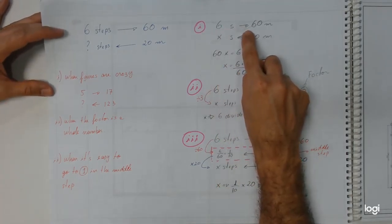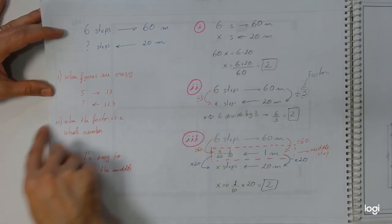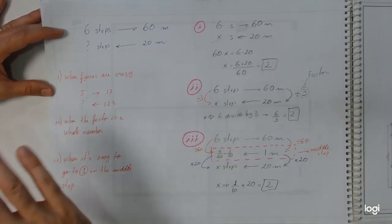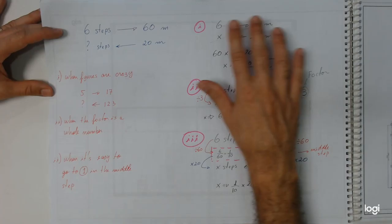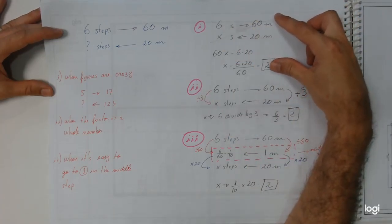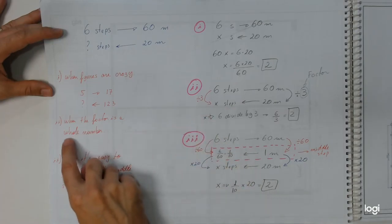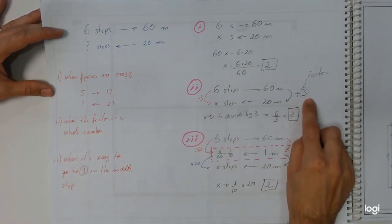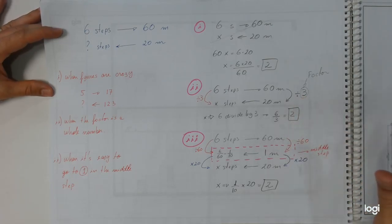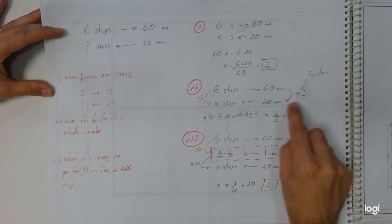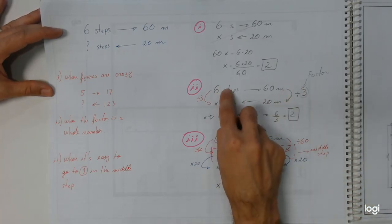Now when are you going to use the cross multiplication? When the numbers are crazy, you have no connection, or you are tired, you don't want to think about it. This is good to use, the first method. When are you going to use this second method? When the factors are simple to work with, like threes, twos, fives, tens, halves, something like this.